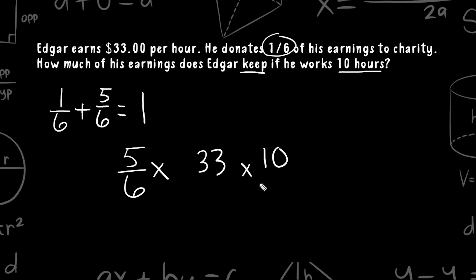So what we could do first is multiply 33 by 10 and then multiply that answer by 5 sixths. But because we're multiplying all three of these numbers together, the commutative property of multiplication says we can go in any order that we wish. So what I'm going to choose to do is I'm going to take the 6 and 33 and simplify a little bit. I know that 3 is a common factor of 6 and 33, so 3 can be divided into 6 twice and 3 is divided into 33 eleven times.